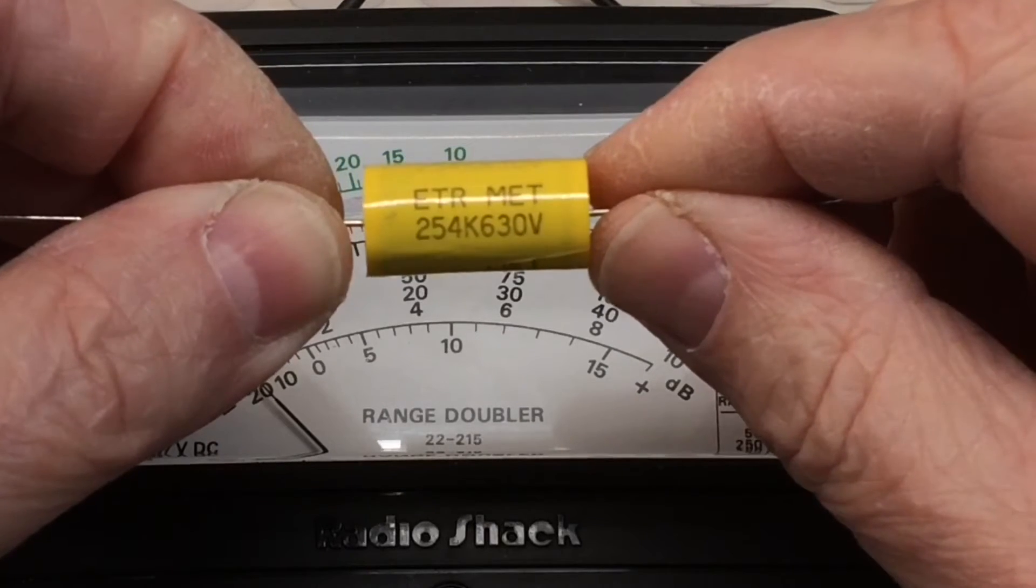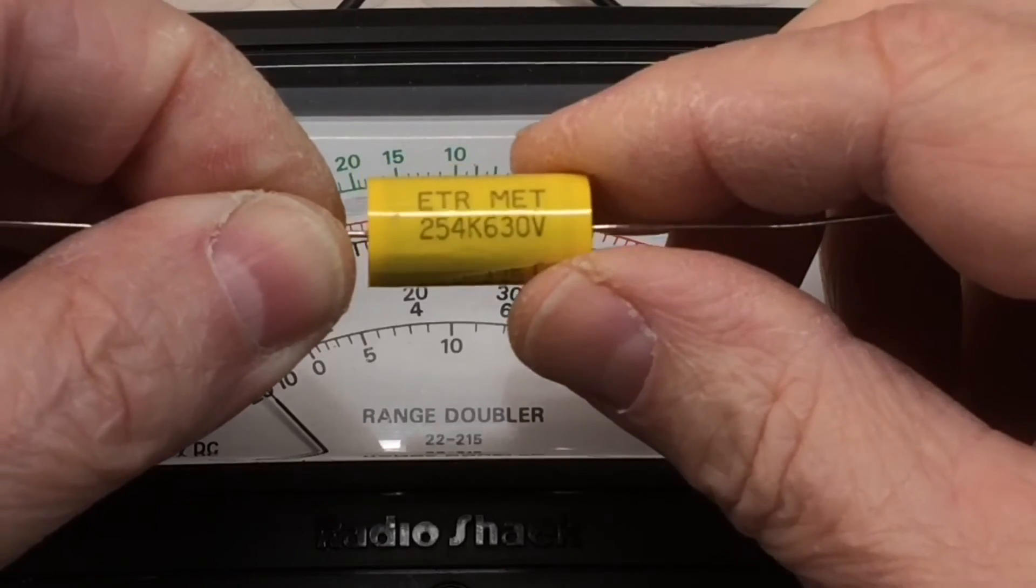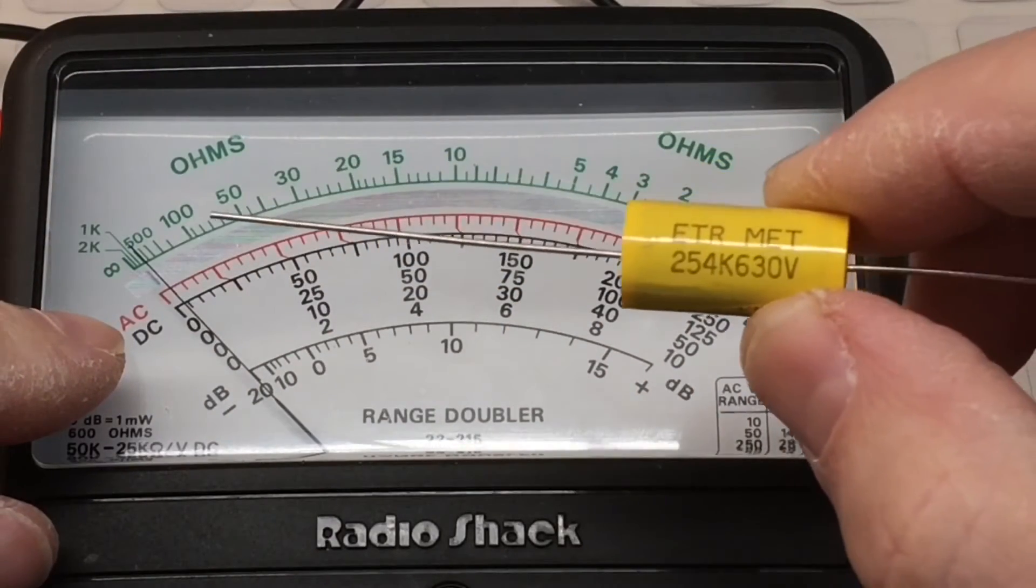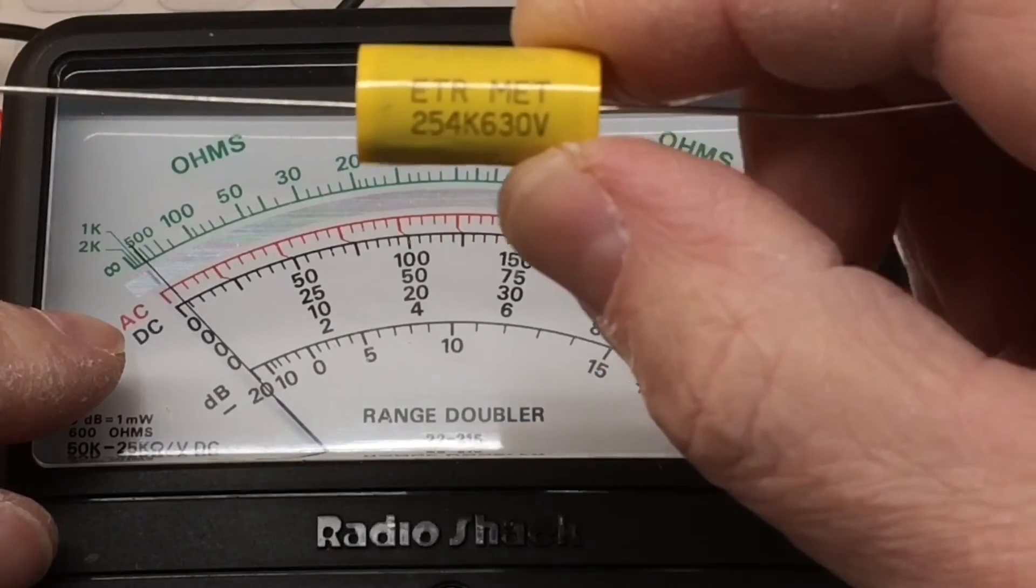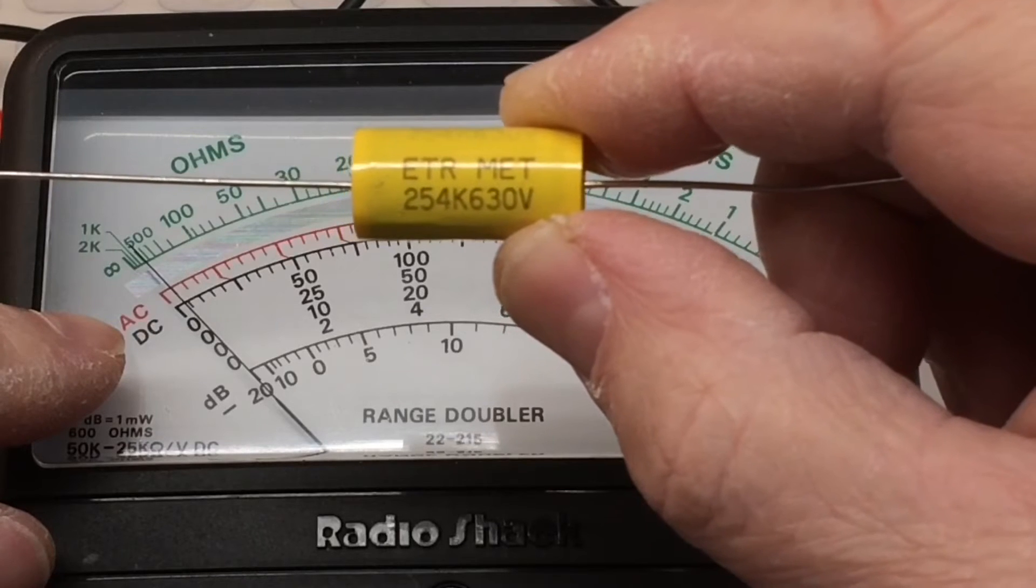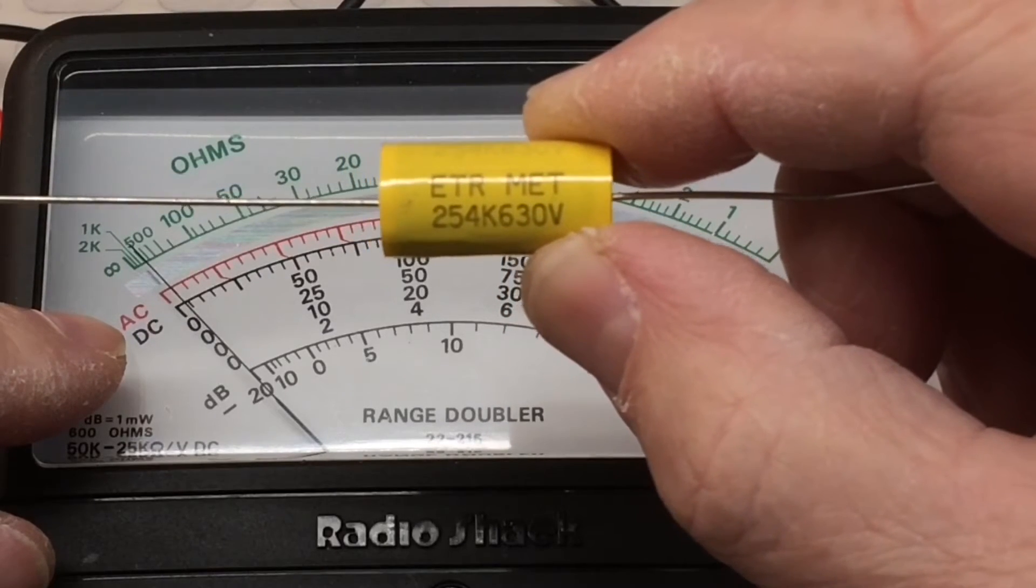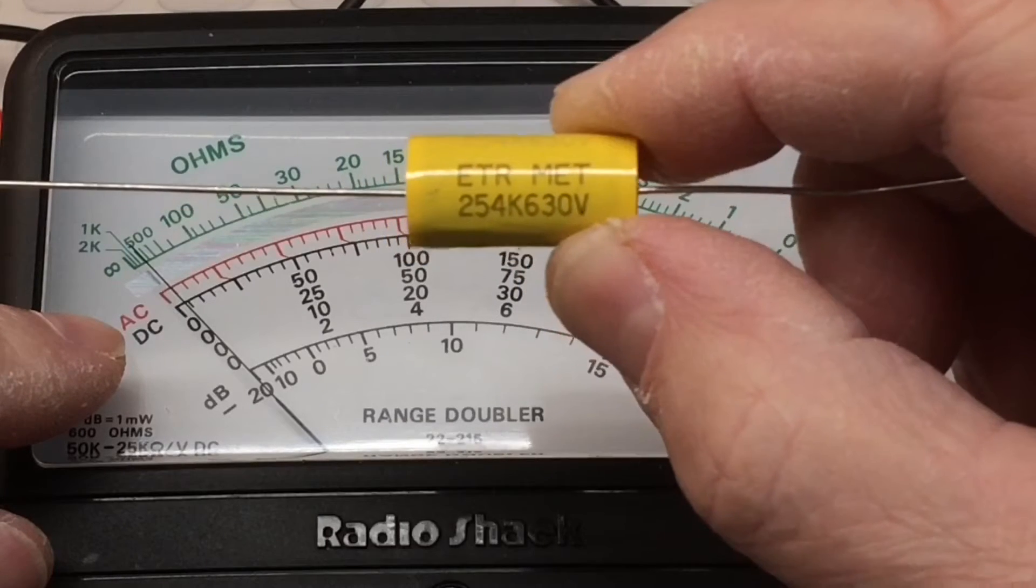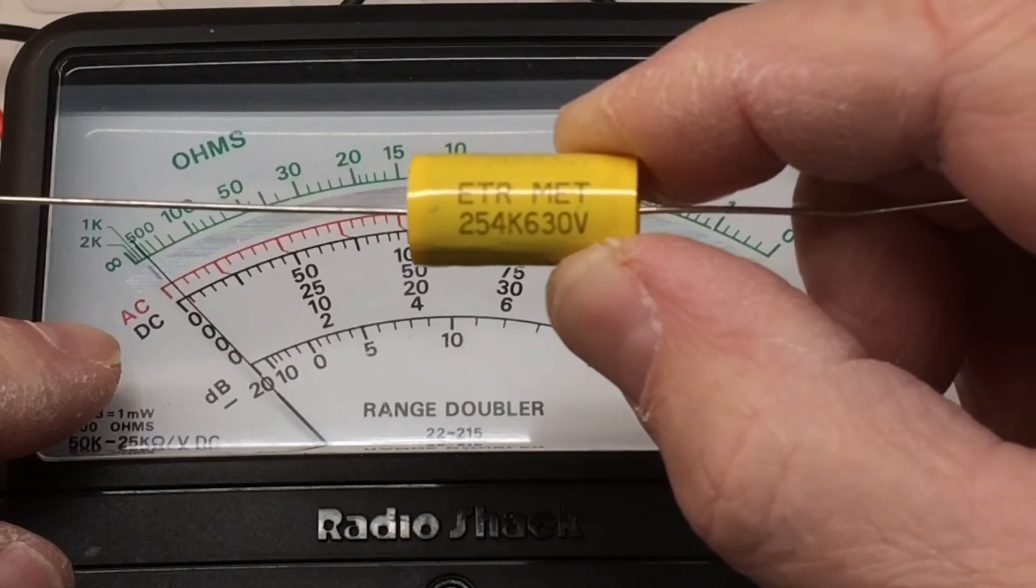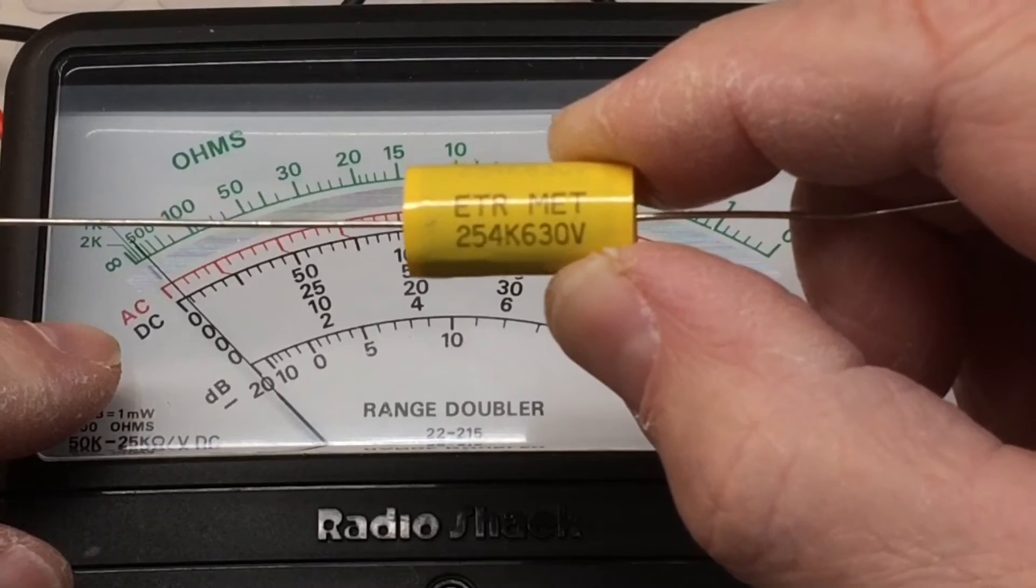And show you how we can come very close to understanding the capacitance value using an analog VOM. We'll start out testing this 0.25 microfarad capacitor. We'll just use the analog meter, a little math along with a DC source to understand the approximate capacitance value. So what I'm shooting for is plus or minus 10%, and we'll see if we can stay within that range using this technique.